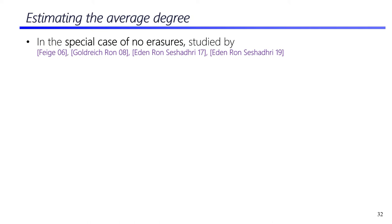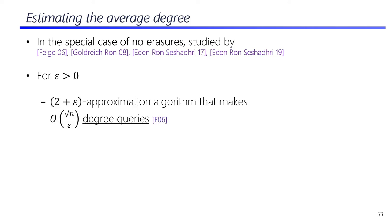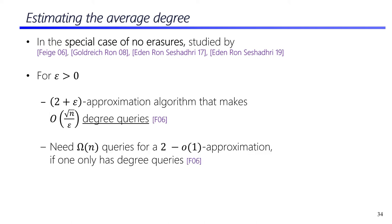The second problem we study is estimating the average degree of a partially erased graph. In the special case of graphs with no erased entries, this has been studied by Feige, Goldreich, Ron, and Eden et al. Feige showed that one can get a 2-plus-epsilon approximation for the average degree by making only root-n over epsilon degree queries. This is interesting since for an arbitrary list of n numbers with values ranging from 1 through n minus 1, it is not possible to obtain a good estimate for the average in sublinear time. Feige also showed that using just degree queries, it is impossible to get any better approximation guarantee in sublinear time.